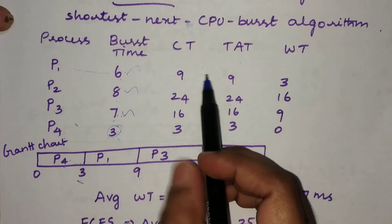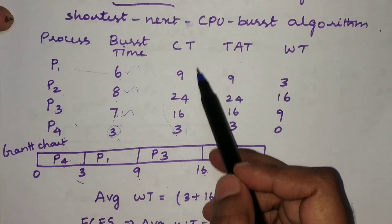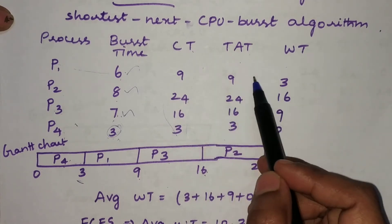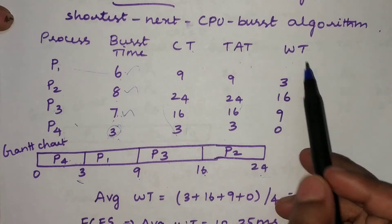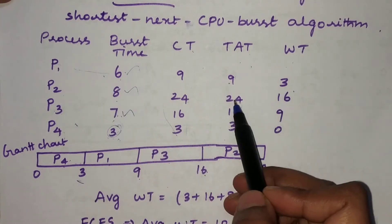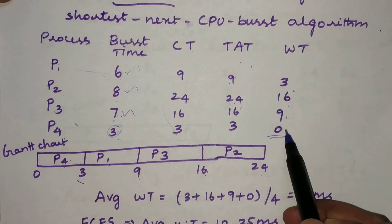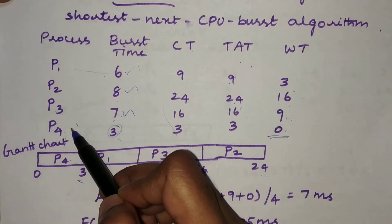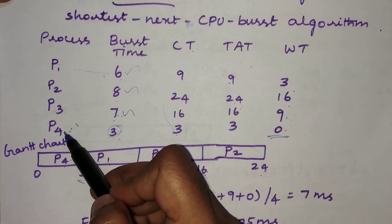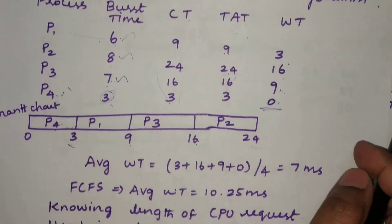We can read the completion times directly from the Gantt chart. Since all processes arrive at time zero, the turnaround time equals the completion time for each process. The waiting time is calculated by subtracting burst time from turnaround time: for P1 it is 9 − 6 = 3; for P2 it is 24 − 8 = 16; for P3 it is 16 − 7 = 9; and for P4 it is 3 − 3 = 0. P4 has zero waiting time because it was scheduled immediately at time zero.